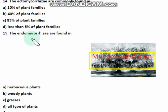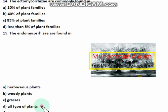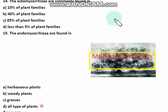The endomycorrhizal are found in herbaceous plants, woody plants, grasses, or all types of plants. The right option is option D — all types of plants. Endomycorrhizal are found in all types of plants.